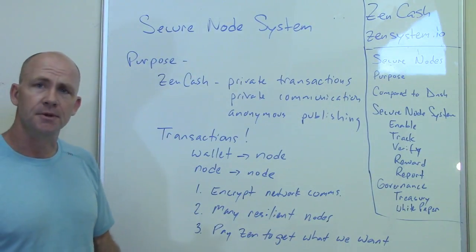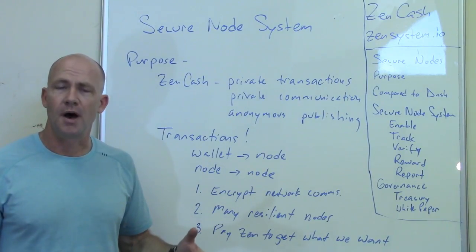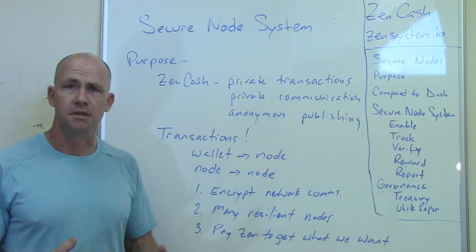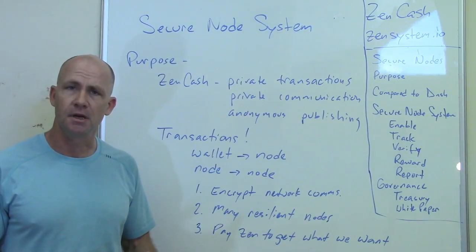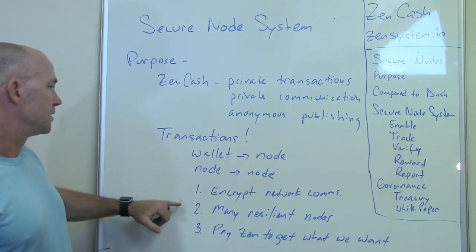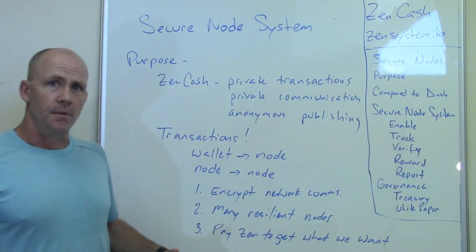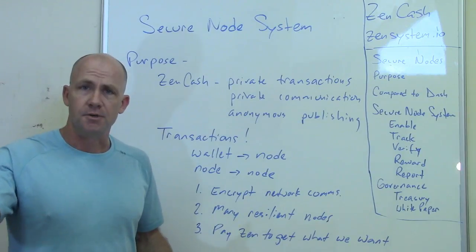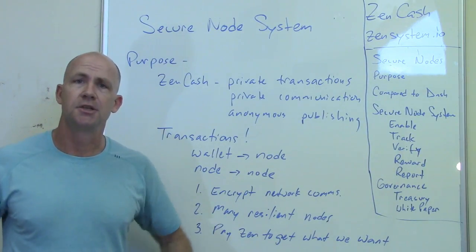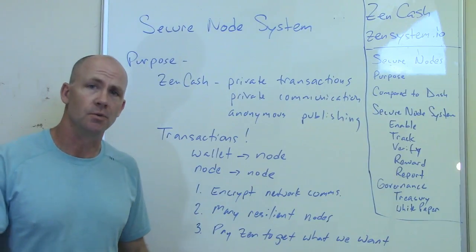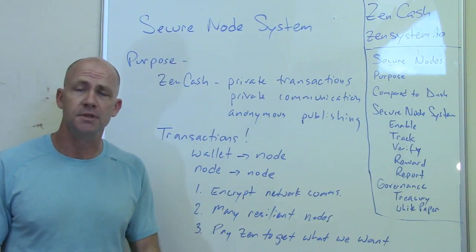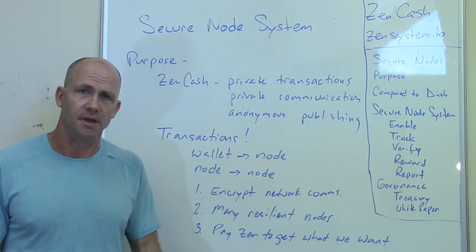In order to make sure that people worldwide are able to do these types of encrypted transactions, communications, and anonymous publishing, we want to have lots of different nodes out there that are resilient. Because if someone in a country doesn't like what their people are doing using ZenCash, those nodes might get attacked. So we have to make sure that those nodes are somewhat secure and resilient so that they can stay up and running.